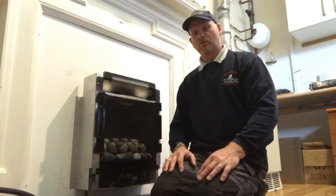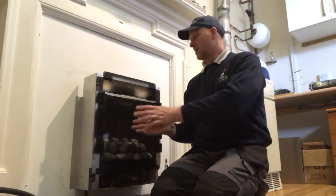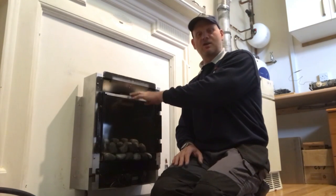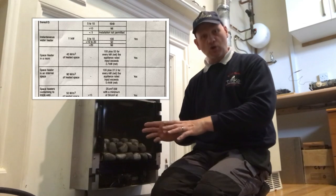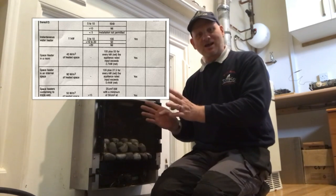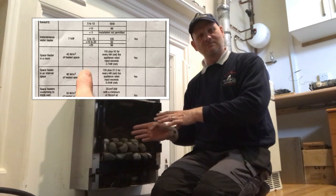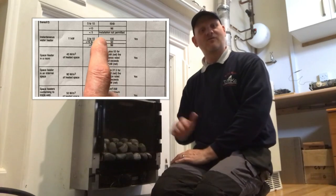The next flueless appliance is a flueless space heater. This is why it's not called a fire — it has a catalytic converter on the top. That means its products of combustion enter the room; they don't go up the chimney. Carbon dioxide and water vapour go through the catalytic converter. This needs ventilation, but it's sized differently to a cooker — technically the same type of ventilation but calculated differently.